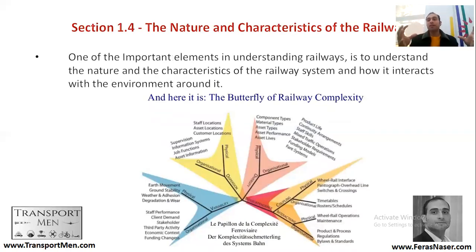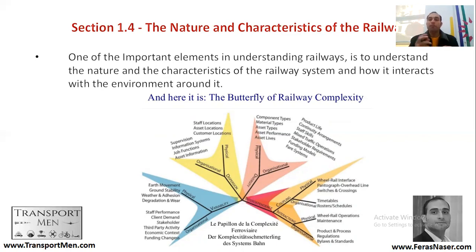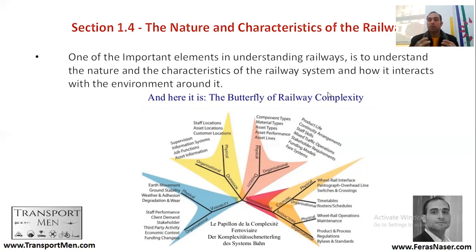Now that we understand how the railway is a system consisting of subsystems, one might ask: what is the difference between the railway as a system and a building as a system? We think of the railway as a complex system. Complexity is a big topic, but to simplify it for the railway's sake, we can understand railways as part of a complex system with specific characteristics.